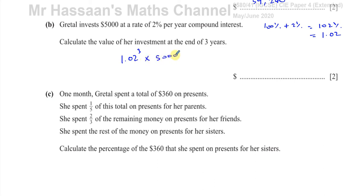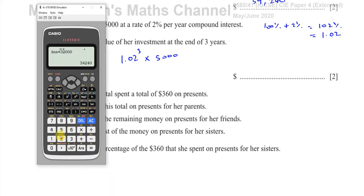So it's 1.02 to the power of 3, times 5,000, and that will give you your answer. You round to two decimal places if needed, but this comes out cleanly.